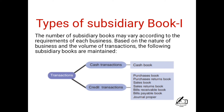For credit transactions, the subsidiary books include: the purchase book, the purchase returns book, the sales book, the sales returns book, bills receivable, bills payable, and finally the journal proper.